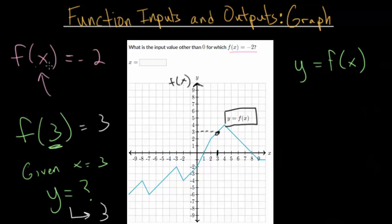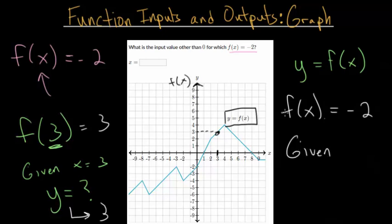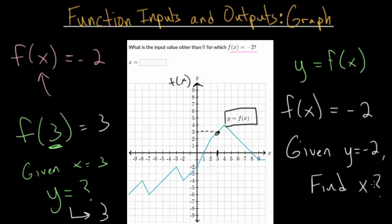Now back to our question — this is essentially the opposite. When you have f of x equal to something, this is basically given our y value. So we are given the y value; in this case, y is negative 2. And we need to find the x value that gives us this y value. It's the opposite process — we're going to go to a y value of negative 2.